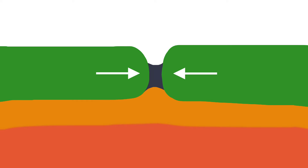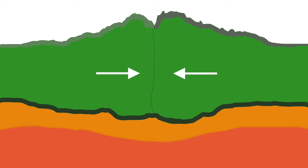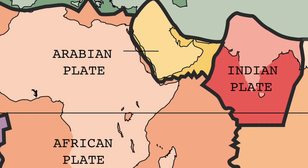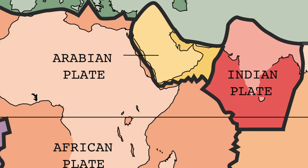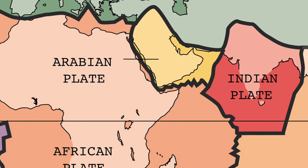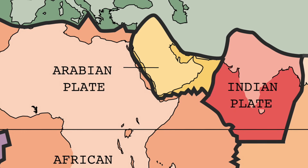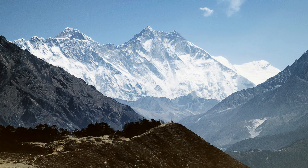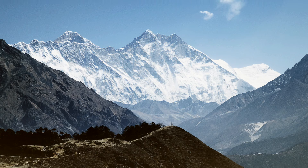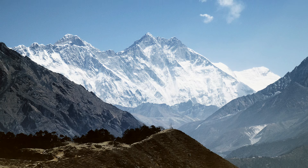We also observe regional metamorphism in areas where two tectonic plates collide. The most prominent of these areas today sits on the boundary between the Indian and Eurasian plates. For the last 50 million years, they have been pushing together with enough force to raise the highest mountains on Earth — the Himalayas.